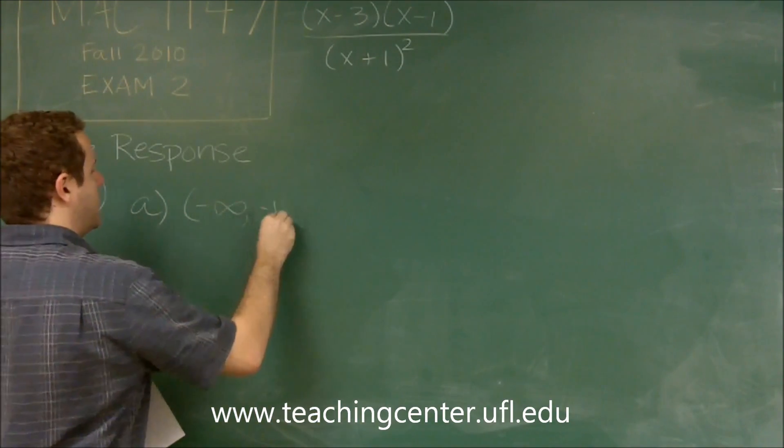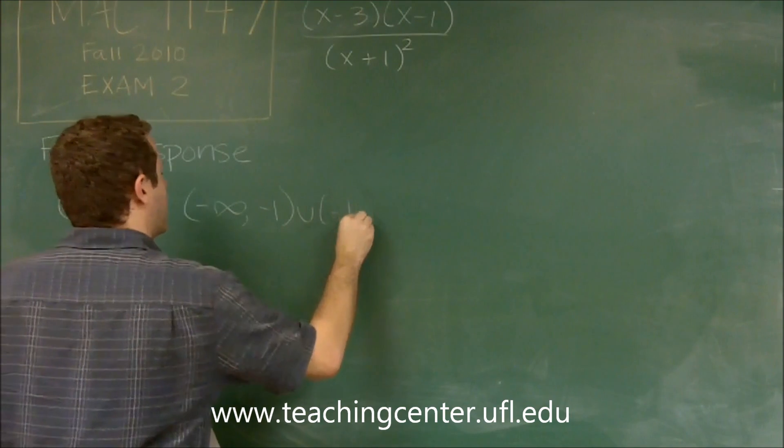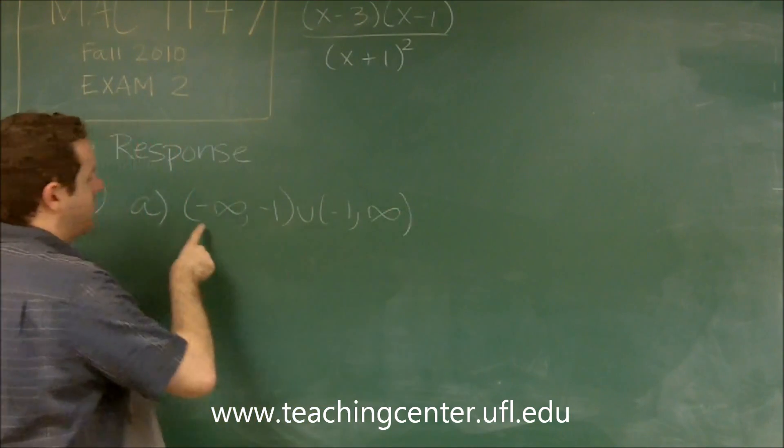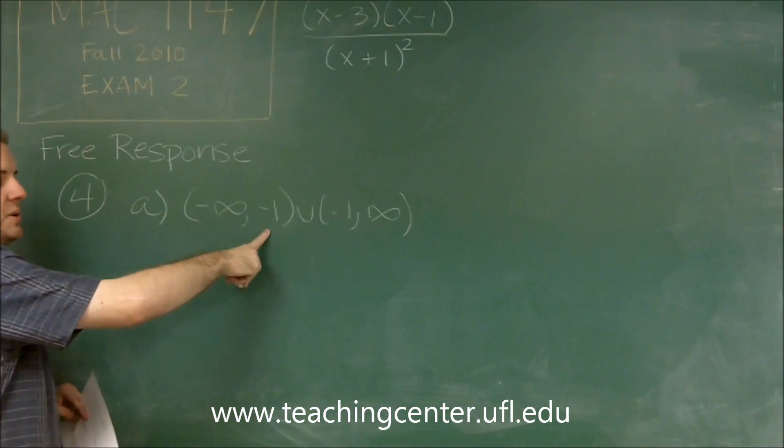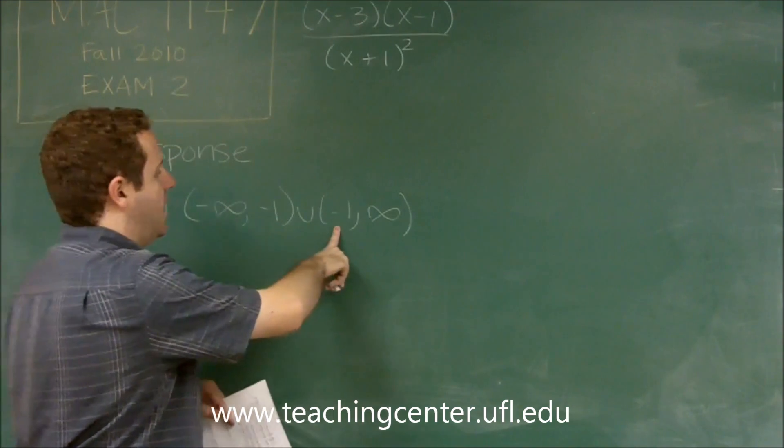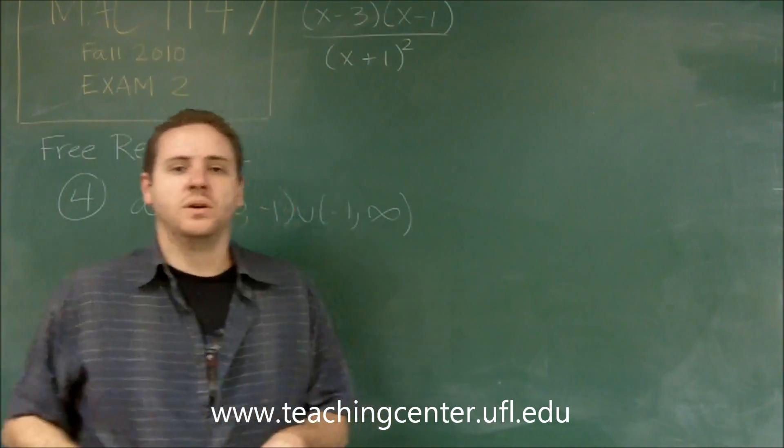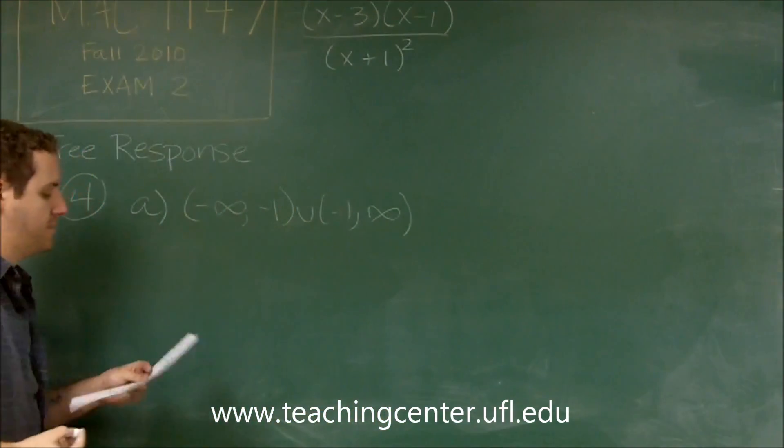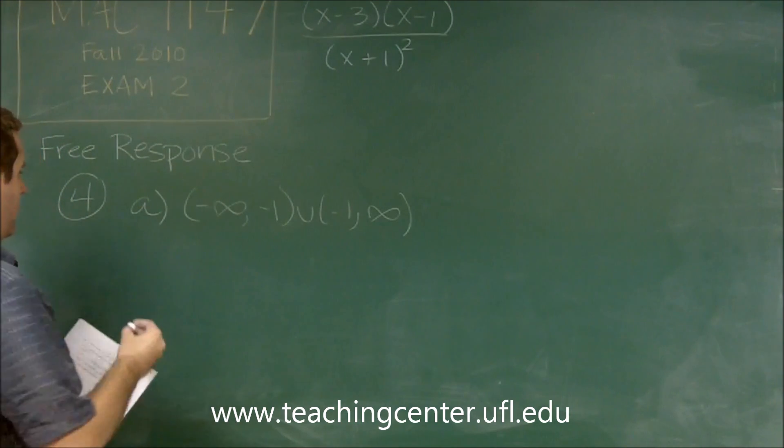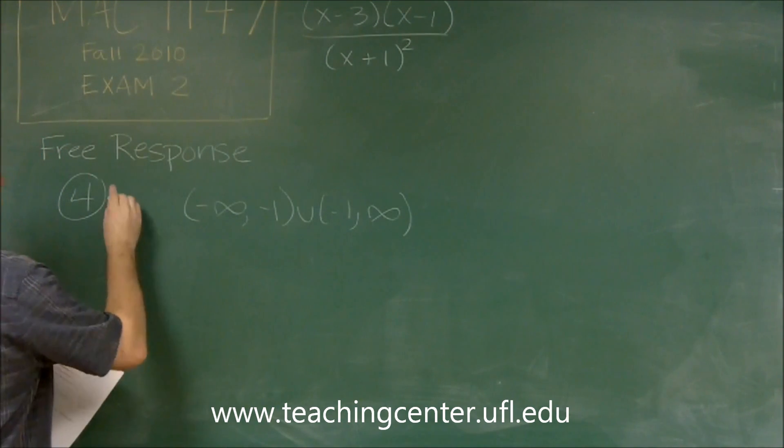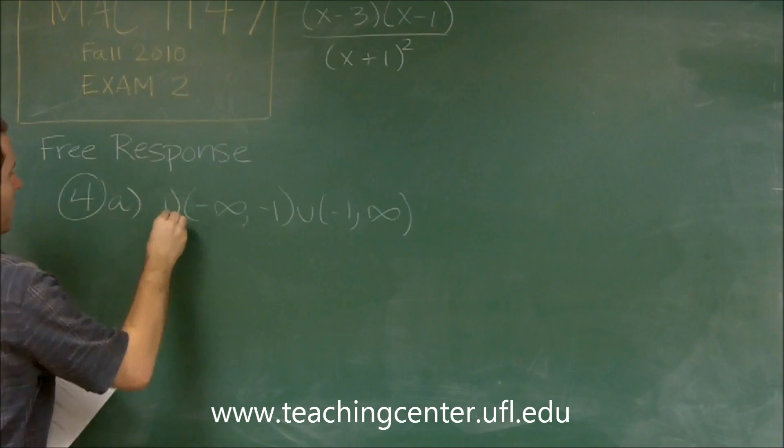We need everything except negative 1, so in interval notation, you write that like that. Everything from negative infinity up to but not including negative 1, and then everything not including negative 1 up to infinity. So that would be our domain.